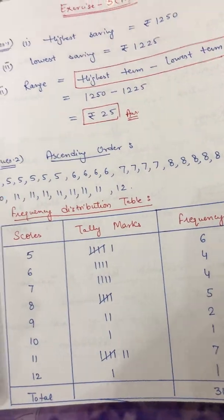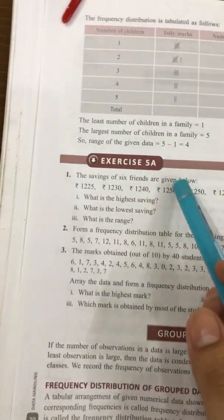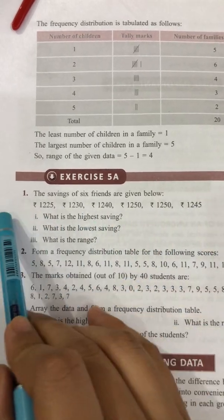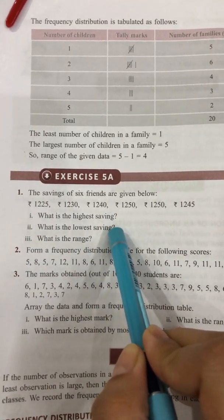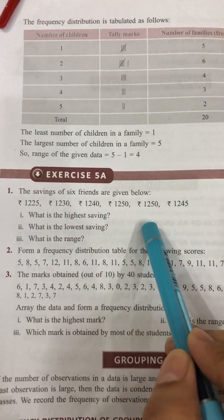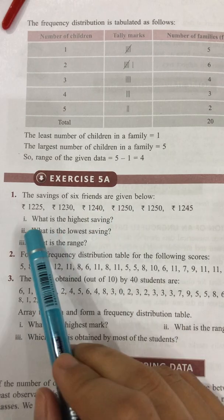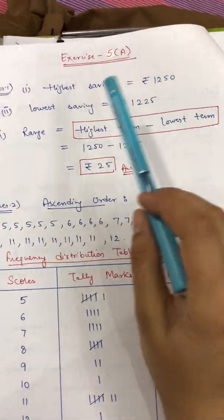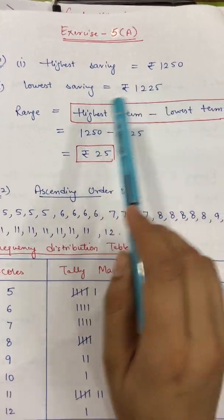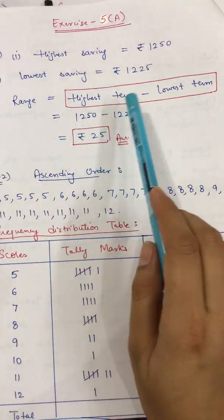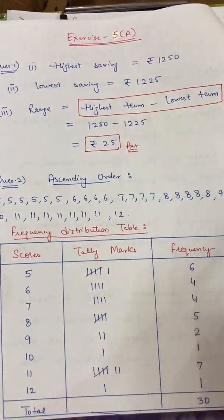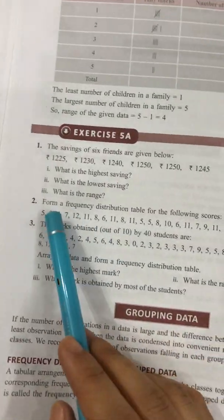The first question: the savings of six friends are given below. The highest saving is 1250 and the lowest saving is 1225. For the range, the formula is highest term minus lowest term. The highest is 1250, the lowest is 1225, and the difference — the range — is rupees 25.